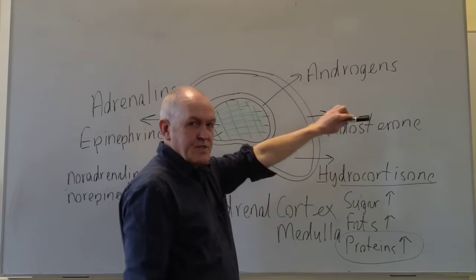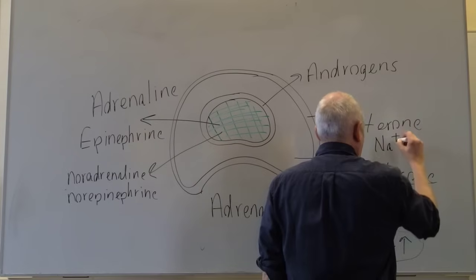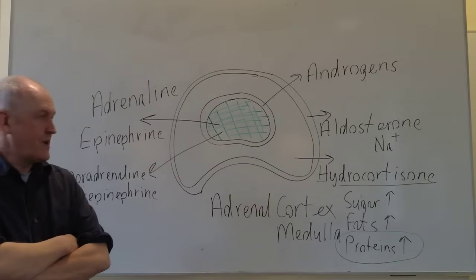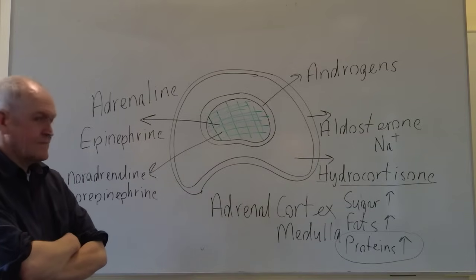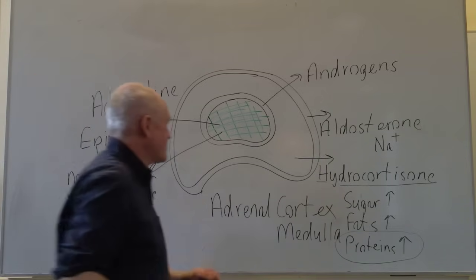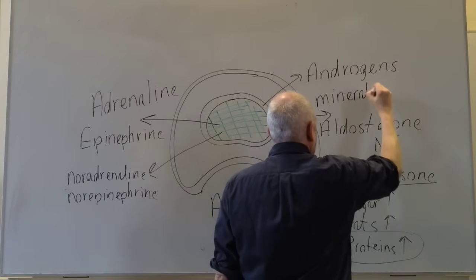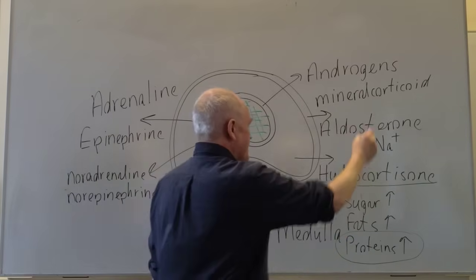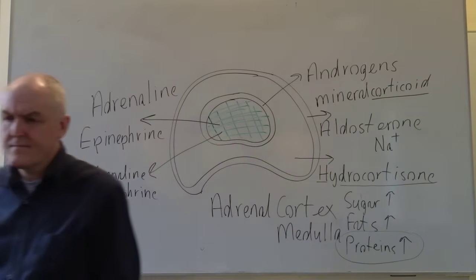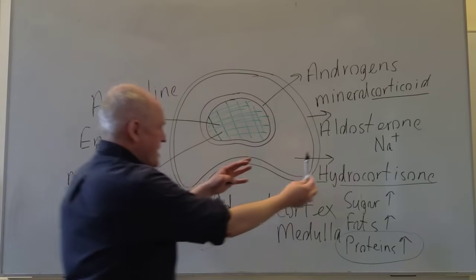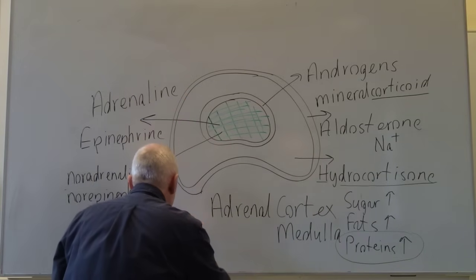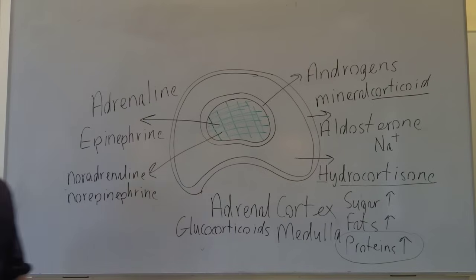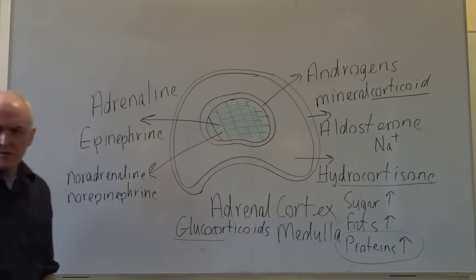Aldosterone: the more aldosterone that's released, the greater the amount of sodium in the blood — so it's controlling sodium levels. That's why it's sometimes called a mineralocorticoid: it's a corticoid because it comes from the adrenal cortex, and sodium is a mineral. The hydrocortisone-type hormones are sometimes called glucocorticoids because when first discovered, people realised they controlled and increased the amount of glucose in the blood.